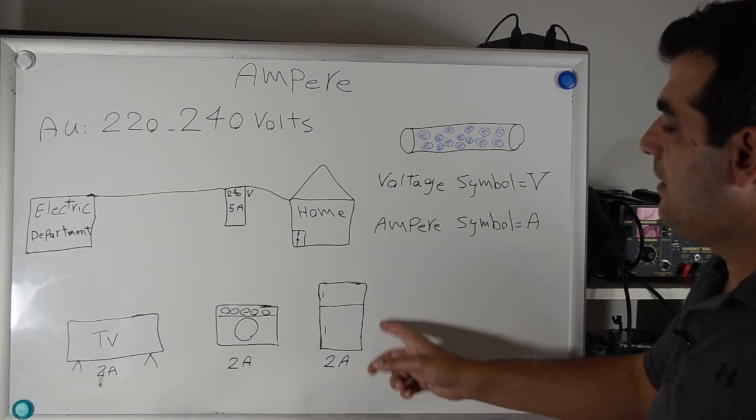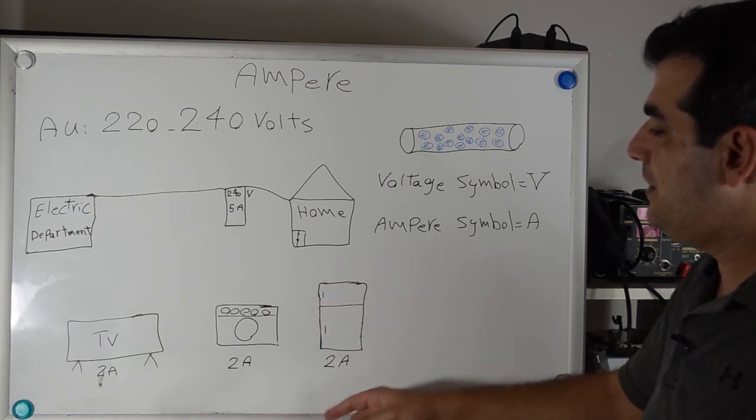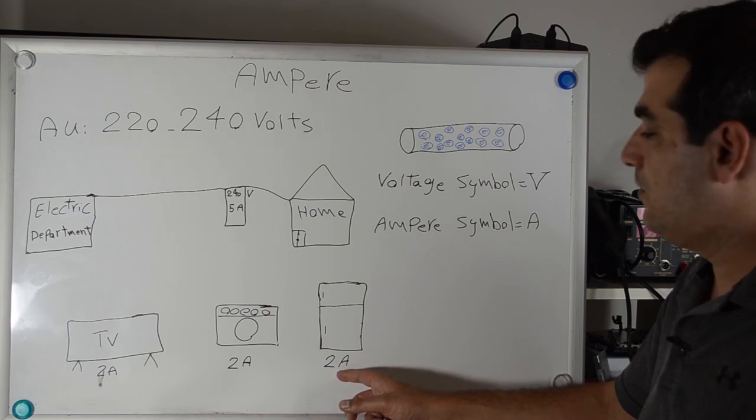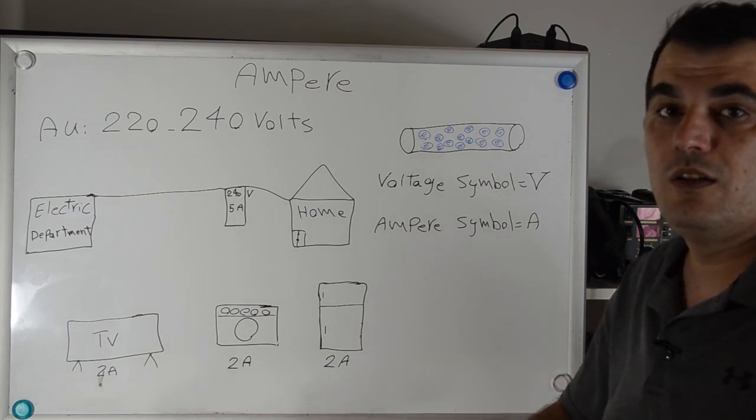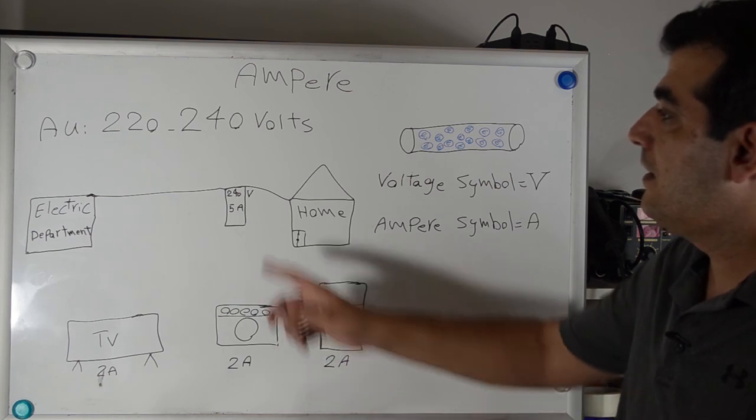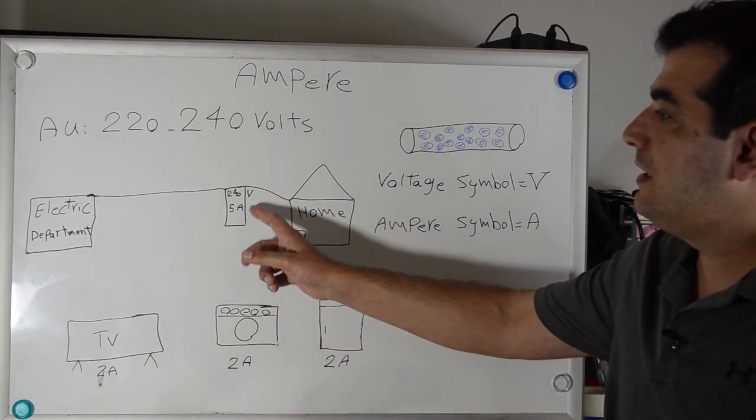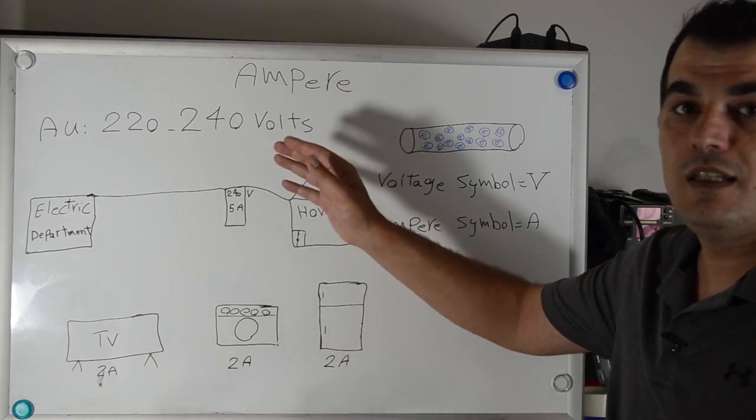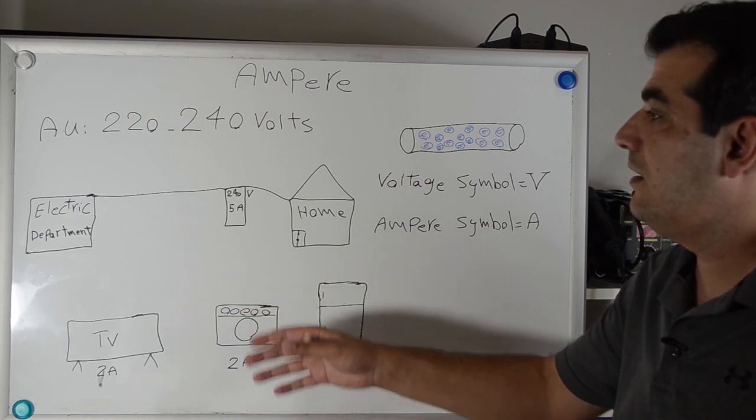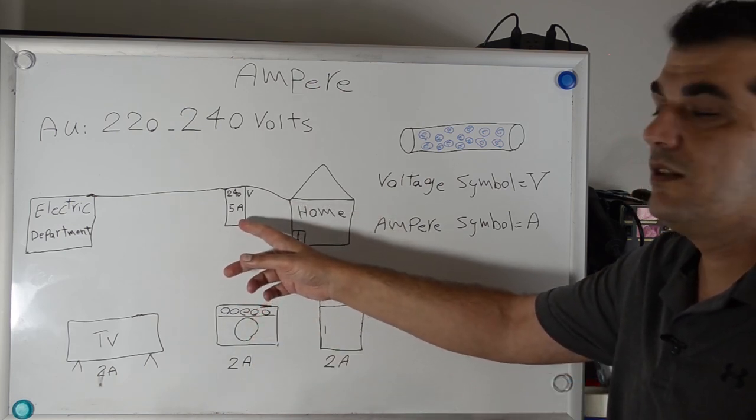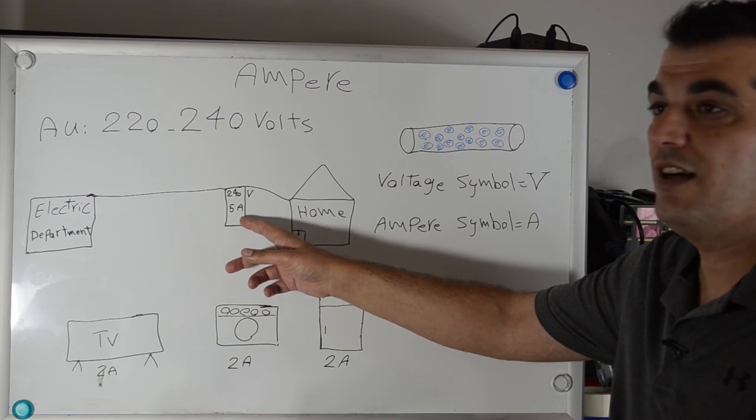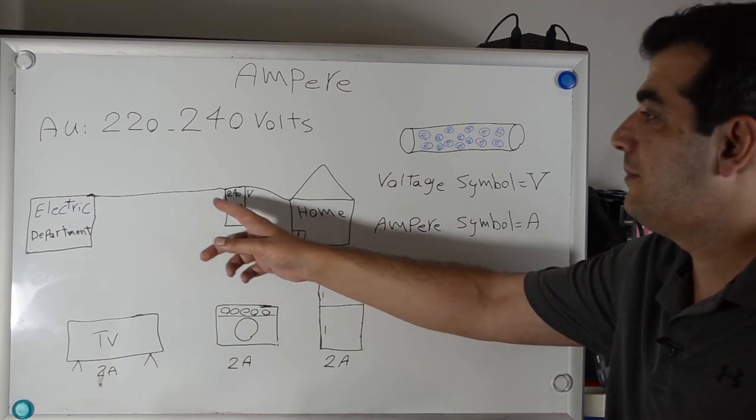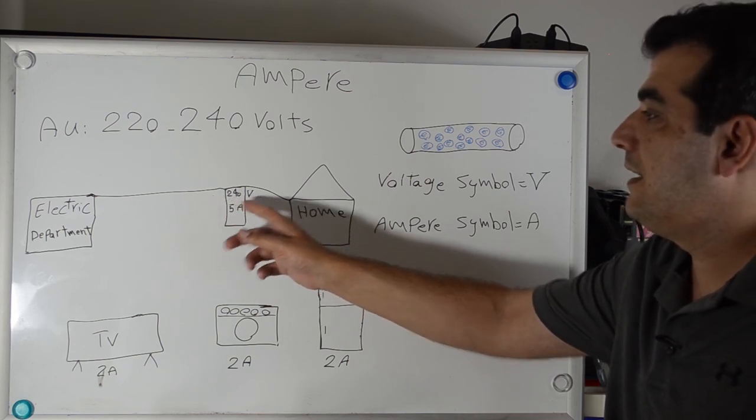But when you turn on the fridge, because the fridge uses 2 amps, your home power electricity is now at capacity. The circuit breaker interrupts the electricity because the maximum for your home power electricity is 5 amps, and it doesn't accept more electric current to pass.